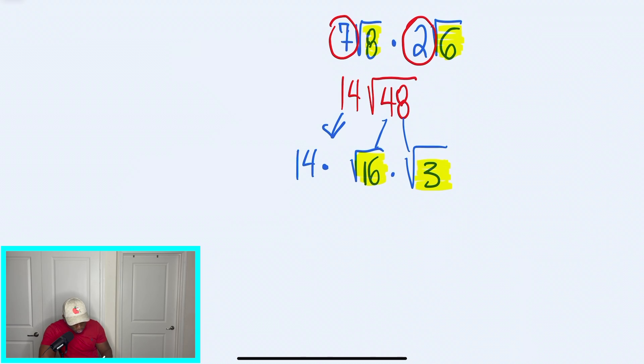But I can do something with 16. So when I go for 16, 14 stays the same. 16 is going to change into 4, because that's the square root. And we're going to multiply this by radical 3. We still have to bring that radical 3 down. And my final answer would be 56 radical 3.